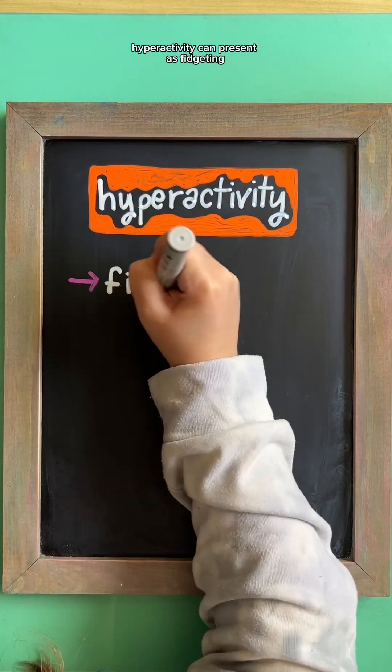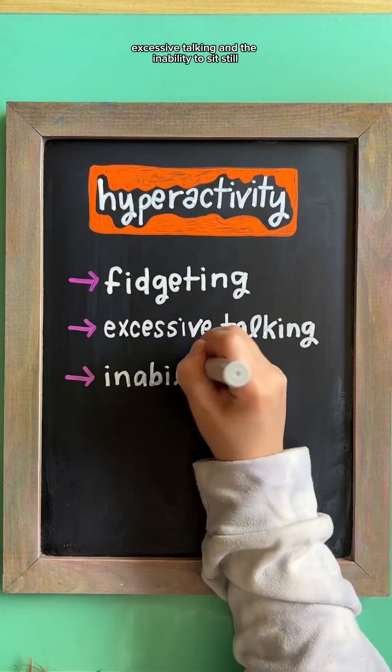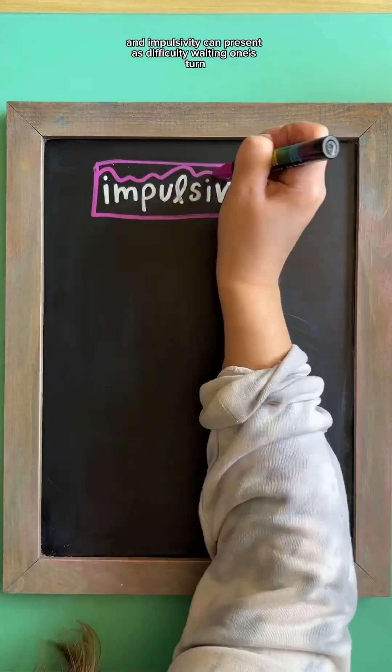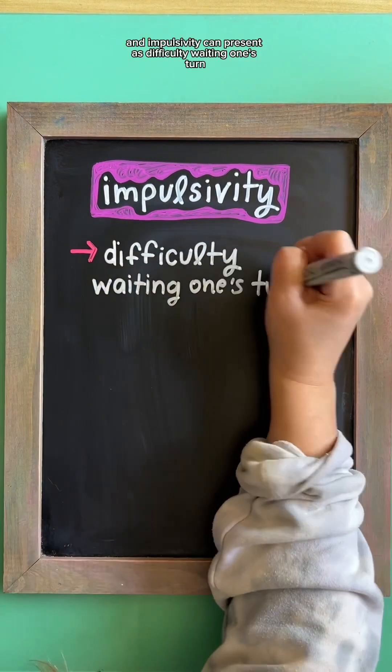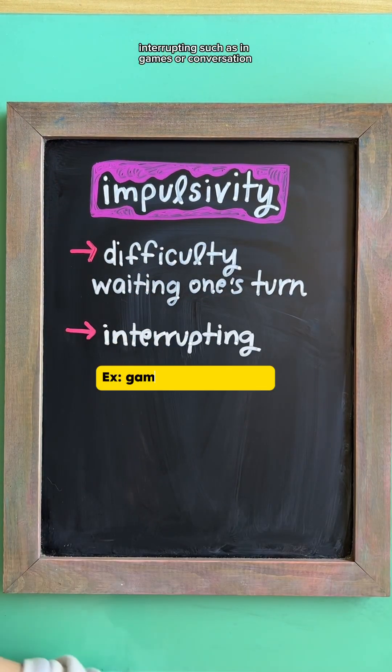Hyperactivity can present as fidgeting, excessive talking, and the inability to sit still. Impulsivity can present as difficulty waiting one's turn, interrupting such as in games or conversation,